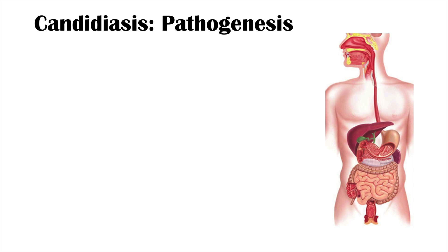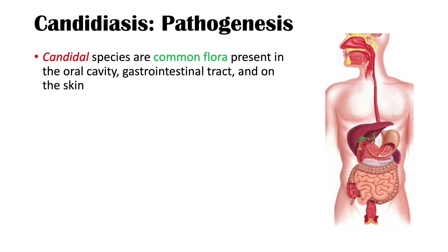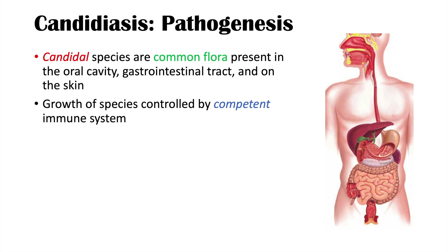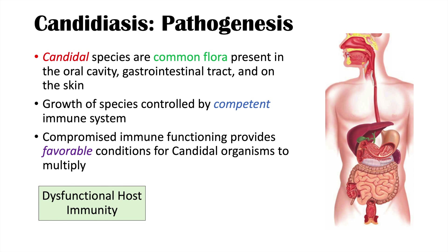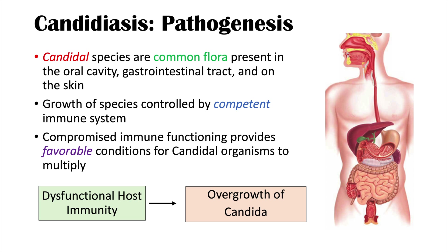Regarding the pathogenesis of candidiasis, candida species are common flora present in the oral cavity, gastrointestinal tract, on the skin, and other parts of the body including the vagina. Growth of the species is normally controlled by a competent immune system. If there is a compromised immune system, this can provide favorable conditions for candida organisms to multiply. Changes in flora, such as in the vaginal area, can also provide favorable conditions for candida overgrowth. Candida species most often flourish in moist environments.